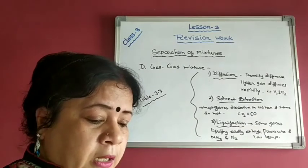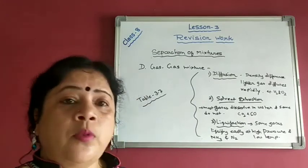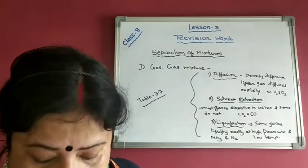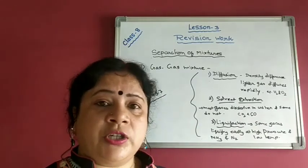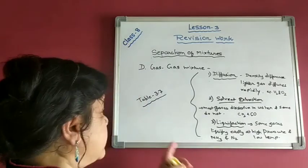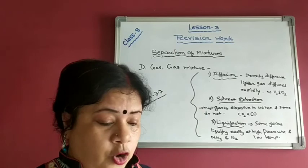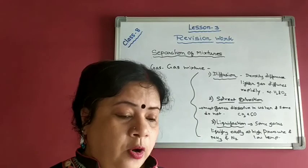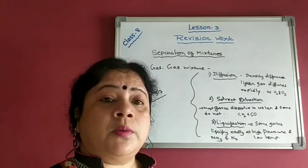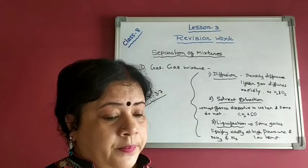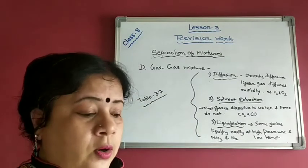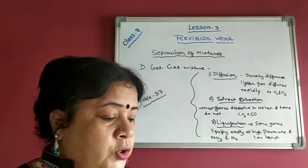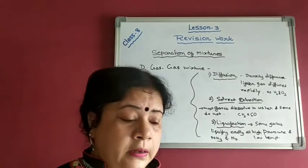With that, we come to the end of this lesson. I hope you have gone through all the videos. You can discuss any doubts with me in the comment box. Table 3.7 is very important — it is the shortest way to summarize all the mixtures and their separation methods. I have also given the exercise questions for Exercise 3a, 3b, and 3c in PDF form. Please go through them. Have a nice day, thank you.